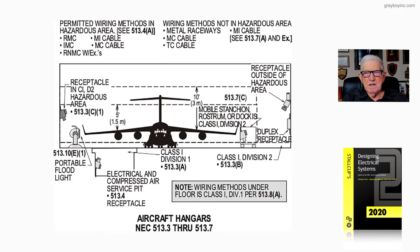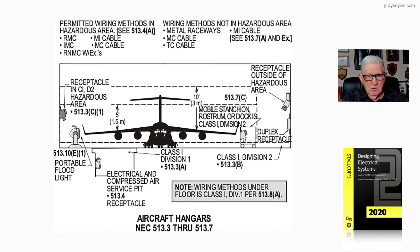A Class 1 Division 1 area is in the pit and also in the concrete. If you're an electrician running wiring in that concrete, you're in a Class 1 Division 1 area and must use wiring methods permitted under 501.10a. When you come out of that concrete and emerge, within 18 inches you're going to need a seal — that seal is required.